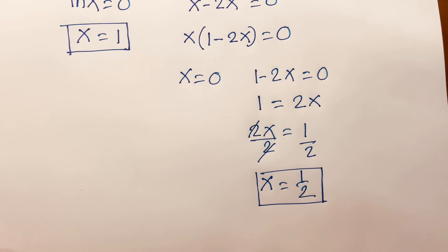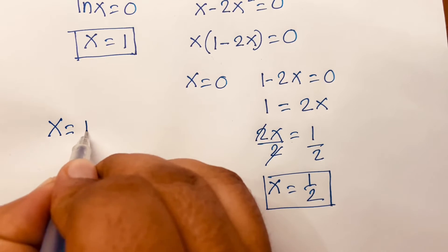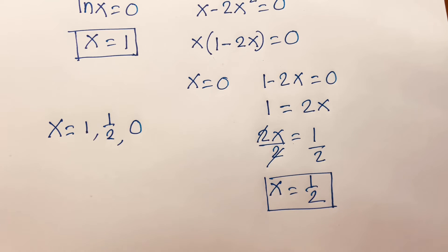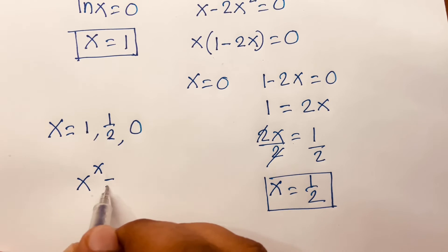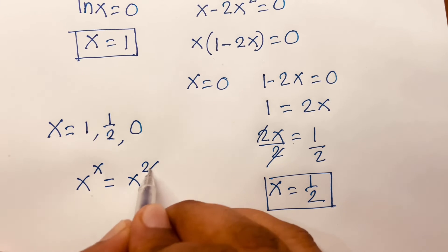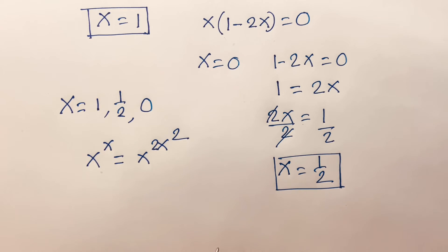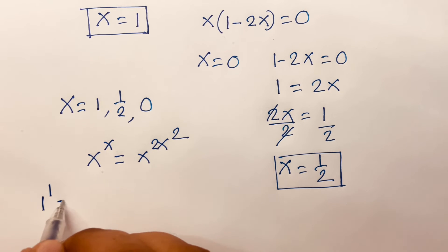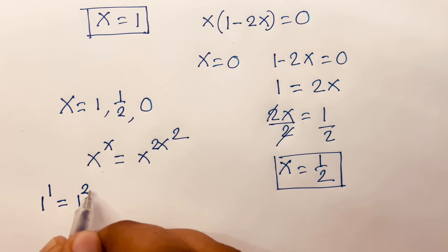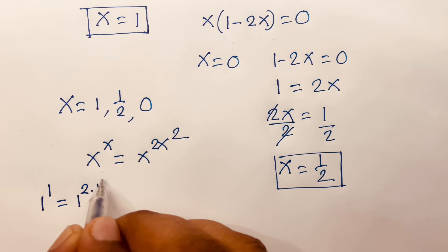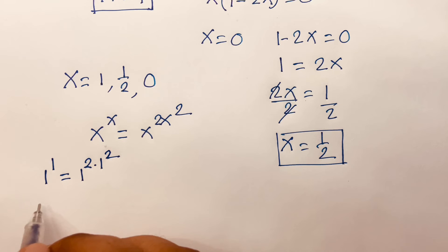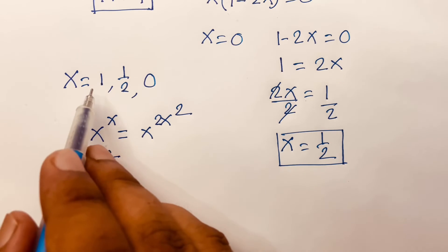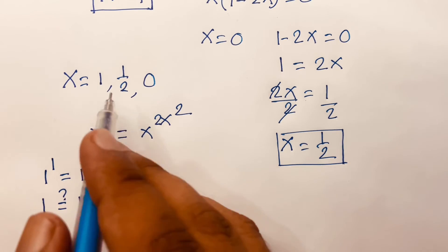So we find the values x = 1, x = 1/2, and x = 0. Now let's verify our equation x^x = x^(2x²). If I put x = 1: 1^1 = 1^(2·1²), which is 1 = 1. So x = 1 is a correct answer.